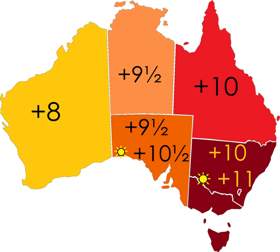Standard Time was introduced in the 1890s when all of the Australian colonies adopted it. Before the switch to Standard Time zones, each local city or town was free to determine its local time, called local mean time. Now, Western Australia uses Western Standard Time, South Australia and the Northern Territory use Central Standard Time, while New South Wales, Queensland, Tasmania, Victoria, and the Australian Capital Territory use Eastern Standard Time.